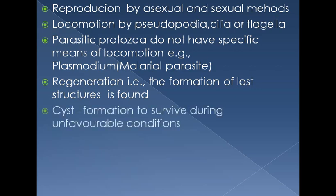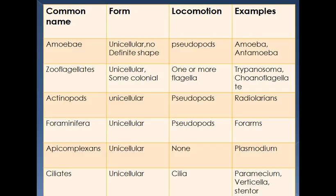Regeneration is the formation of lost structures. Cyst formation occurs in some animal-like protists to survive during unfavorable conditions. A cyst is a thick protective wall secreted by the unicellular protist during unfavorable conditions. The major types of animal-like protists include amoeba, zooflagellates (animal-like flagellates), actinopods, foraminifers (shelled protozoa), apicomplexans, and ciliates.